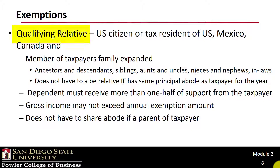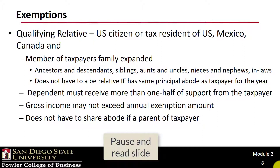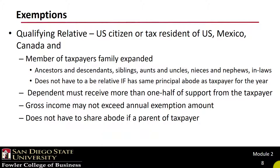Take a moment to read the qualifications for a qualifying relative. A taxpayer will at times take care of another individual that is not a close relative — that is where the qualifying relative comes into play. The term relative is used because it often is a relative, but is not required to be so. The qualifying individual may not have income in excess of the personal exemption amount, which was $4,050 in 2017 and was expected to be $4,150 in 2018. Another important caveat is that a parent can be a qualifying relative and not live with the taxpayer.